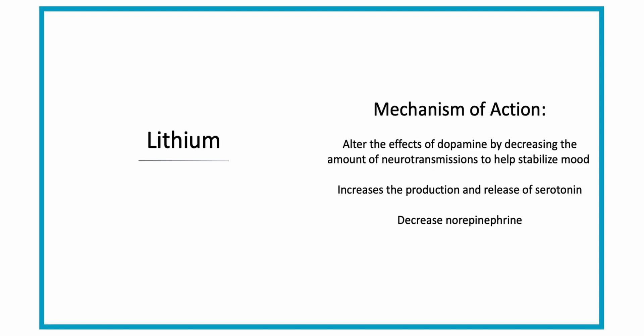The mechanism of action of lithium is not fully known, but it is widely distributed in the central nervous system and interacts with many different neurotransmitters and receptors. This is thought to alter the effects of dopamine, decreasing the excited neurotransmissions that are occurring. By decreasing the number of excited neurotransmissions, it helps to stabilize and regulate mood.